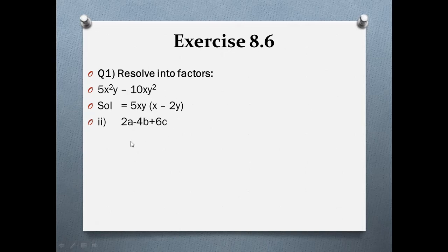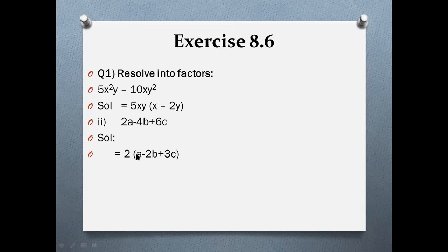Now the second part: 2a − 4b + 6c. In this question, all variables are different from each other, so we cannot take a variable common. Only the coefficient can be checked. All coefficients are divisible by 2, so take 2 common: 2(a − 2b + 3c). This is the required answer.